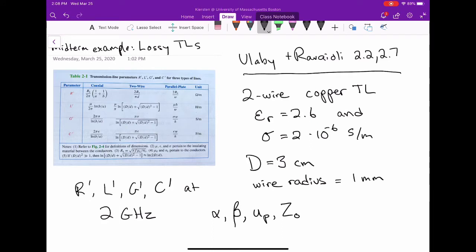The per unit length parameters come out of table 2-1 in the book. For two-wire transmission line, we're looking at this column in the middle. It's important to note that the formula for Rs is given right there.